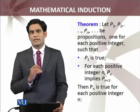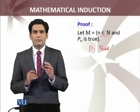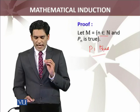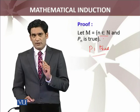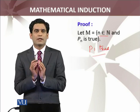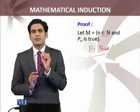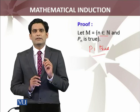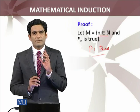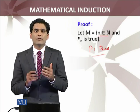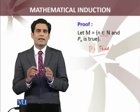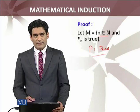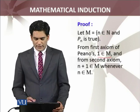Now, what is the formal proof? I define a set M, where M is the collection of natural numbers n for which the proposition Pn is true. The first claim is that this set M is non-empty. It contains the natural number 1, because the theorem's statement says P1 is true. If P1 is true, it means 1 belongs to the set M as we have defined it.